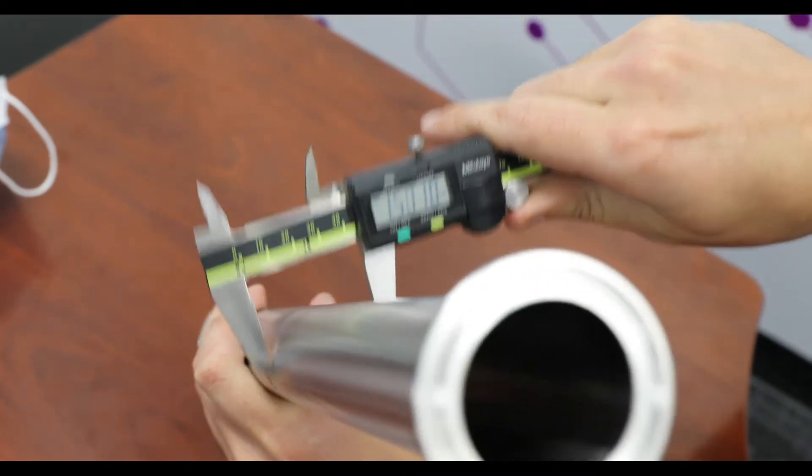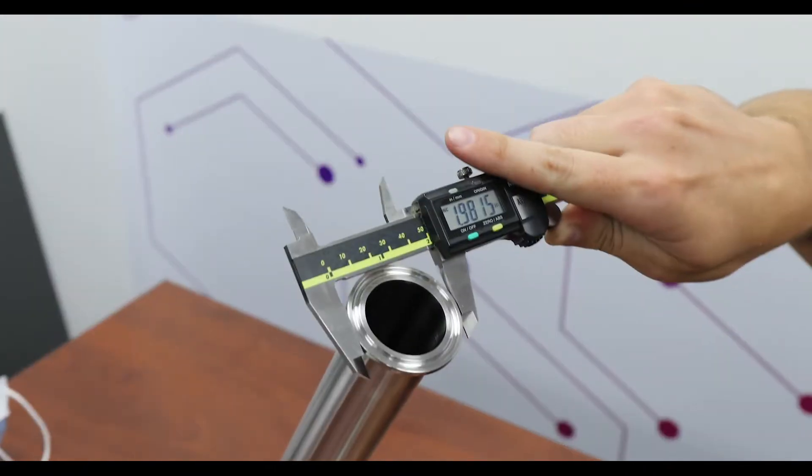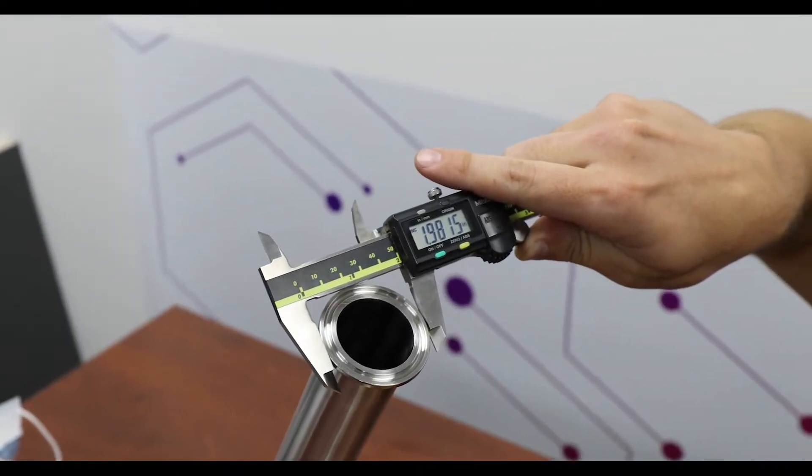A lot of times people will measure the top here, which is the ferrule or flange, and they'll say oh that's about a two inch spool, but that would be an inaccurate way to measure this spool right here.